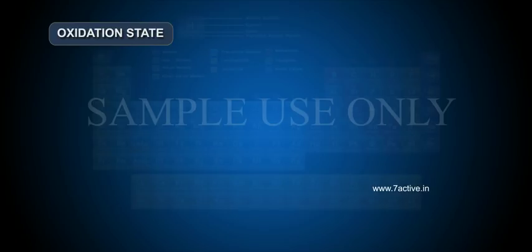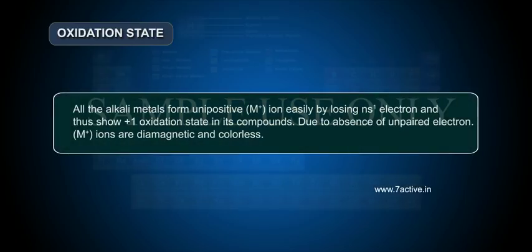Oxidation state. All the alkali metals form unipositive M plus ion easily by losing NS1 electron and thus show plus 1 oxidation state in its compounds. Due to absence of unpaired electron, M plus ions are diamagnetic and colourless.